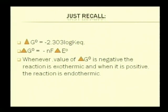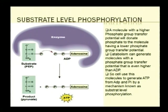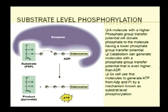Substrate-level phosphorylation is a very simple mechanism used by many chemotrophs for ATP generation. It is essentially the phosphorylation of ADP, where inorganic phosphate is added to form a phosphoanhydride bond. Because formation of a phosphoanhydride bond requires an input of energy, microorganisms achieve this by direct interaction of ADP with a high-energy intermediate such as phosphoenolpyruvate or 1,3-bisphosphoglyceric acid.